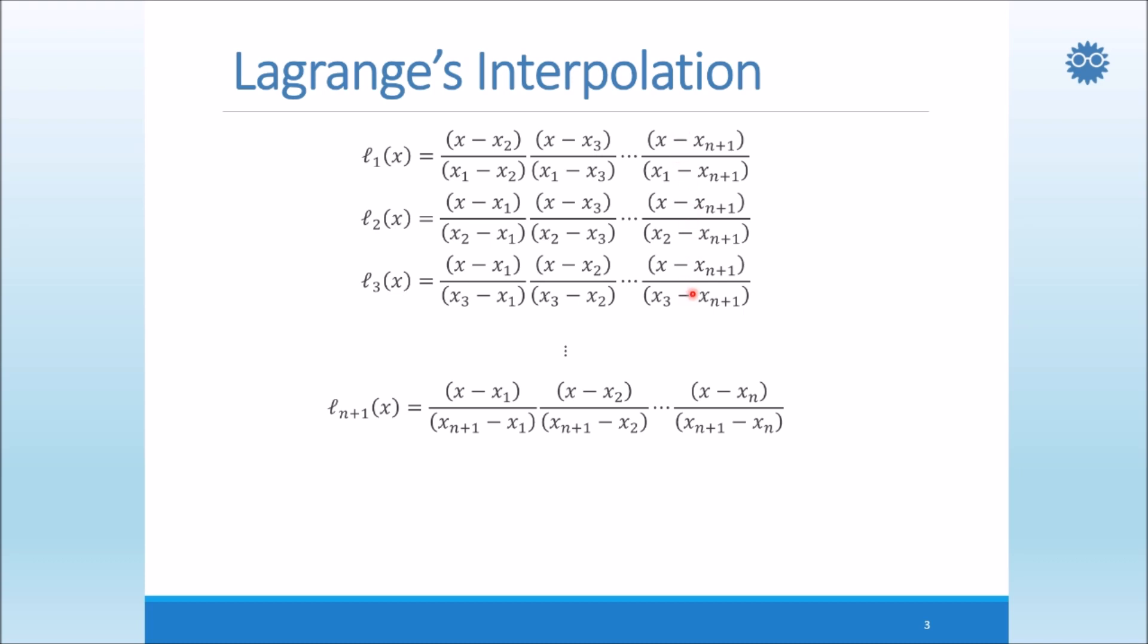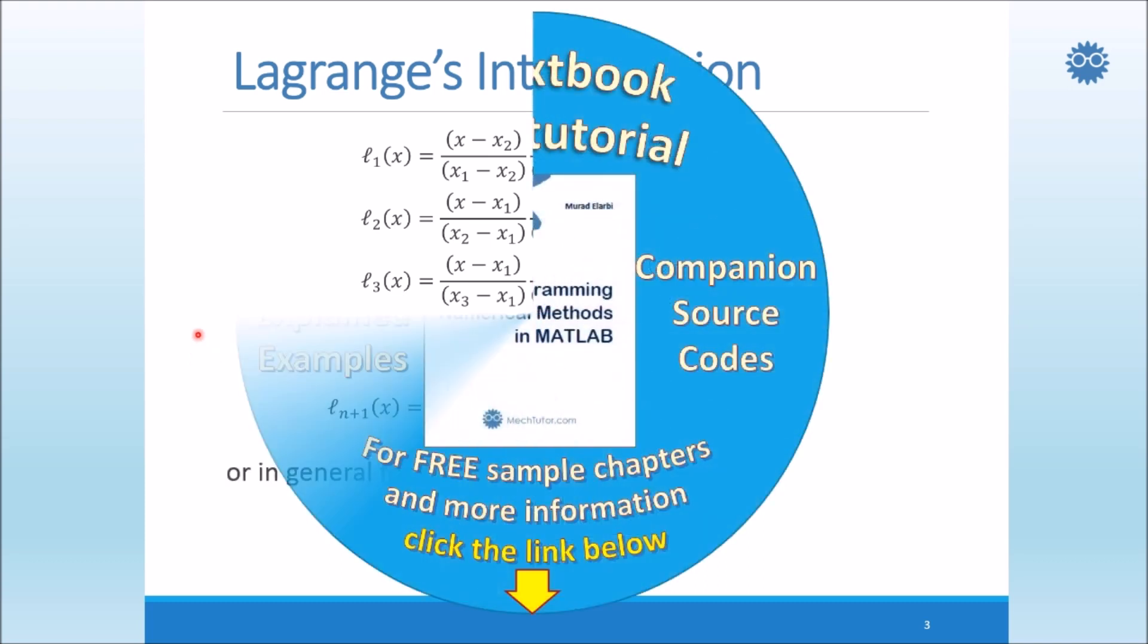Now we should notice here, and this is the reason that the polynomial has the degree n and not n plus 1. Why? Because since we omit a term which will cause infinity, that means the number of product or number of terms in this product will be less by 1 from the number of data points. And that's why the degree of the polynomial will be less by 1 from the given data points.